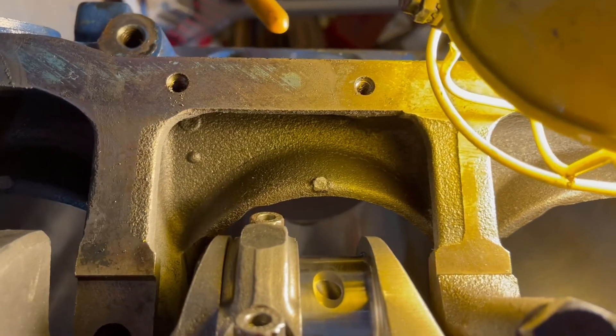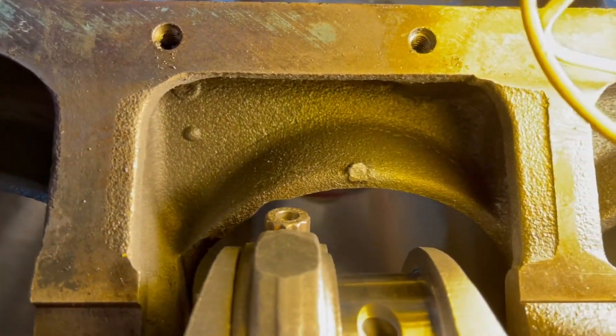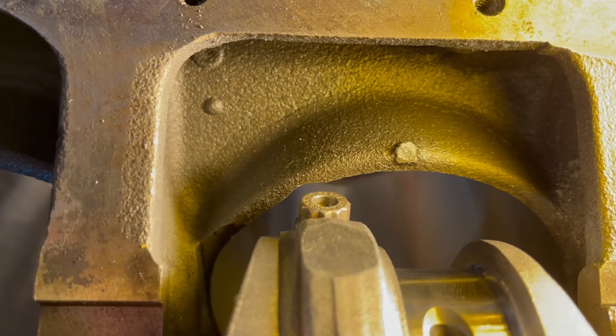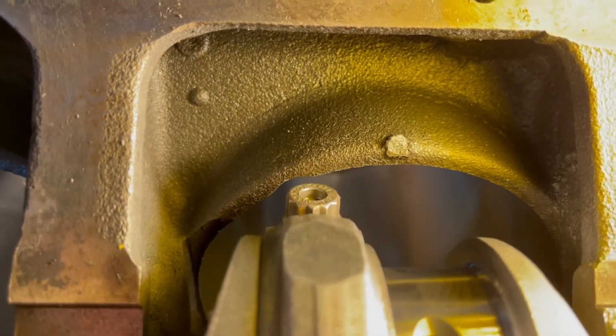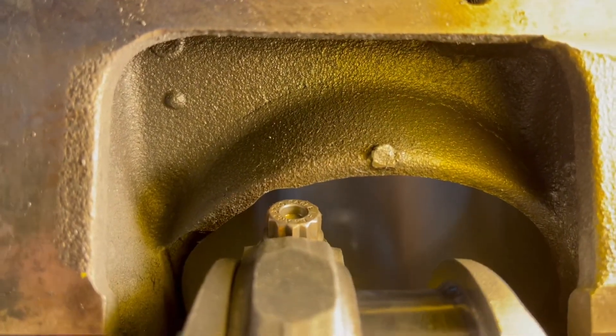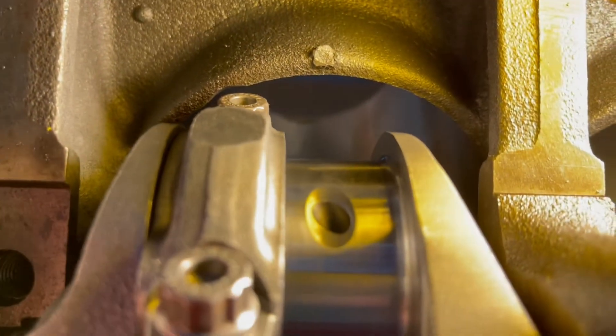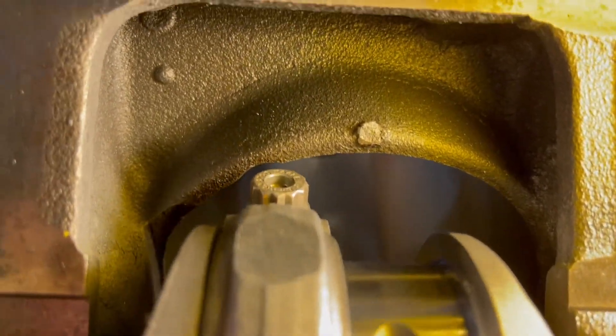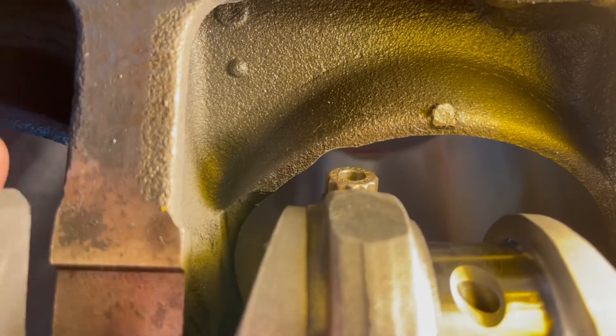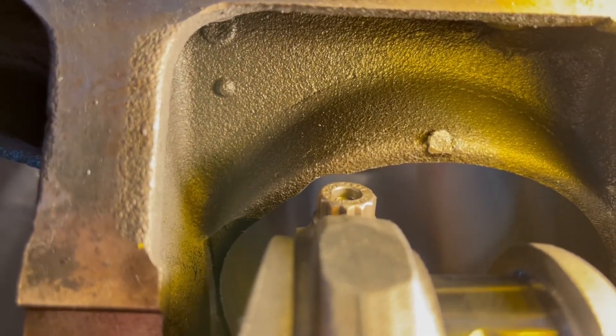Okay, I've finished clearancing for my connecting rod bolts. Didn't have to take much off at all. As you can see, got plenty of room there right when that rod bolt passes the cylinder wall.